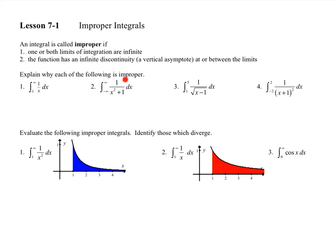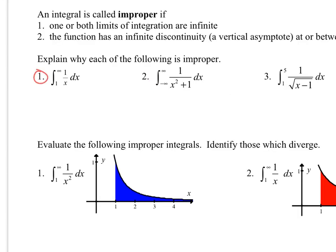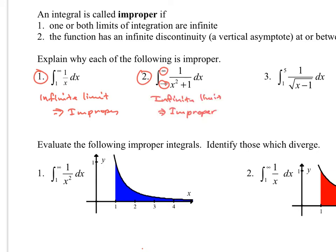So why are these examples improper? If you look at number one, that one has an infinite limit of integration, so that would be an improper integral. And then number two, same thing — we have two infinite limits, so it also has an infinite limit and would be improper as well.